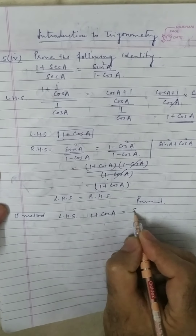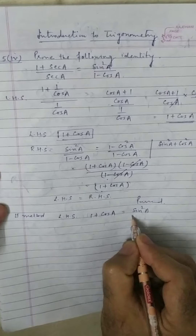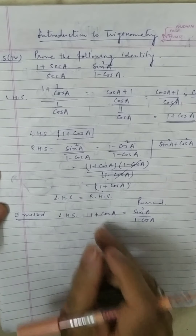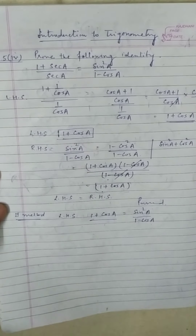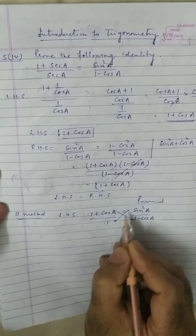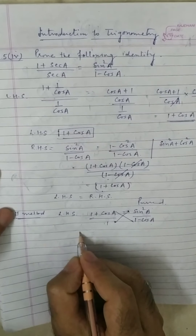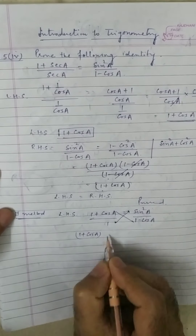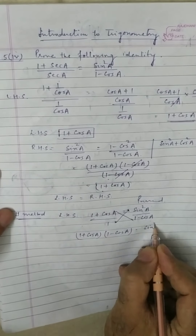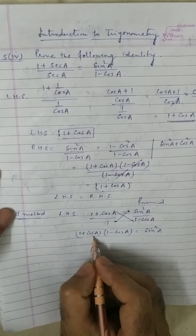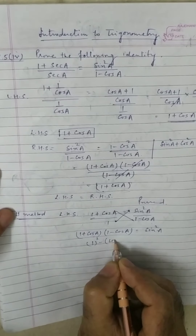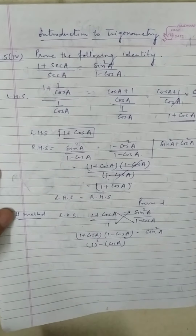You can also verify it as: left hand side 1 plus cos a is equal to sin square a upon 1 minus cos a. You can do cross multiplication. Then 1 plus cos a into 1 minus cos a equals sin square a. Using a plus b times a minus b equals a square minus b square, 1 minus cos square a equals sin square a.